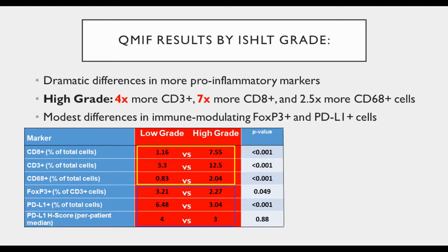When we look at the biopsies by ISHLT grade, there are dramatic differences in the more pro-inflammatory markers: seven times more CD8 cells in high-grade biopsies, four times more CD3 cells in high-grade biopsies, and 2.5 times more CD68 cells in high-grade biopsies. When we look at the more immune-modulatory markers — FOXP3 and PD-L1 — we see only modest differences between low and high ISHLT grades. There's perhaps a modest difference in FOXP3 cells approaching significance, and while there are more overall PD-L1 cells, the PD-L1 H-score — a composite metric of prevalence and staining intensity — is quite similar between low-grade and high-grade. So high-grade has a lot more pro-inflammatory CD3 cells, which is perhaps not that surprising.